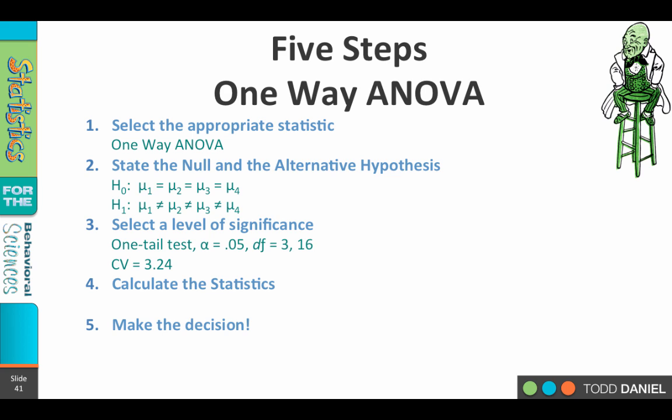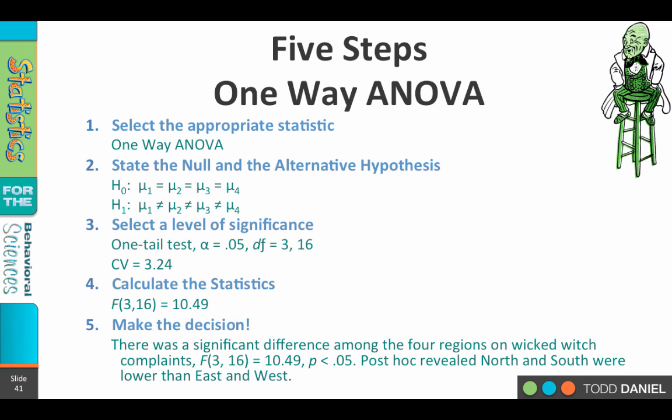The statistic calculated from the F-test was an F-value of 10.49 with 3 and 16 degrees of freedom — notice how the degrees of freedom are written in parentheses. The F-value tells us that differences did exist, and the post-hoc tells us where those differences actually resided. There was a statistically significant difference among the four regions on Wicked Witch complaints: F(3, 16) = 10.49, p < 0.05.